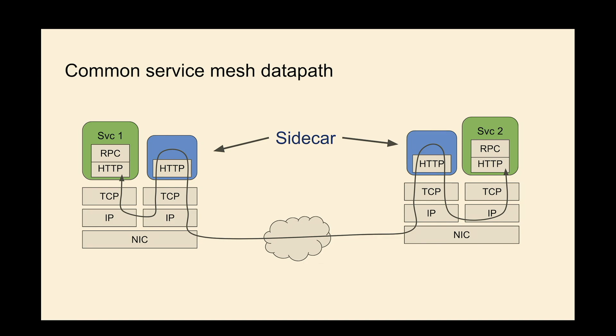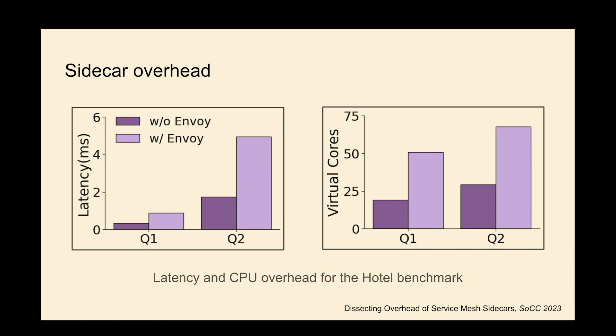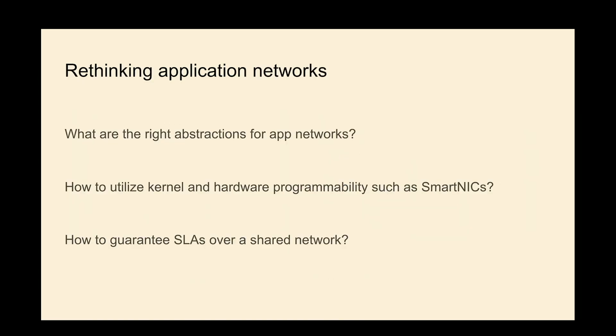To quantify the problem: once you introduce a sidecar, latency doubles and CPU usage doubles compared to not using the sidecar at all. But performance isn't the only concern. The abstractions for these things are very middlebox-oriented — the specification from a developer is just 'take this piece of code, configure it this way, put it in front of this other piece of code.' The abstraction operates at HTTP, IP, or TCP and doesn't speak RPC-level semantics.